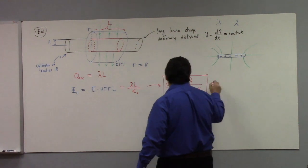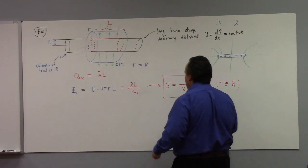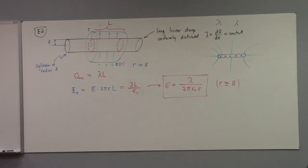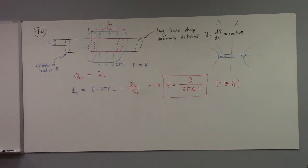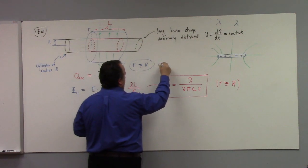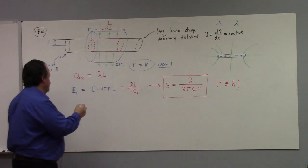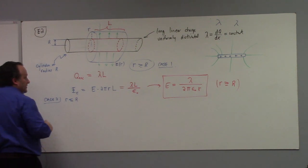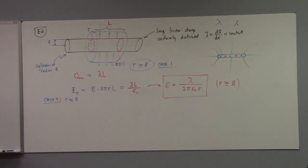That's the electric field in the case r is greater than or equal to big R. We have seen this before — it was for a line charge where I didn't give any geometric size to the wire. So there's another case to consider here — that was case one. Case two is r less than or equal to big R.